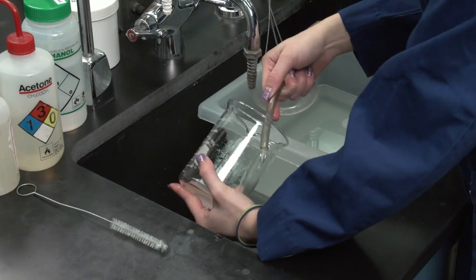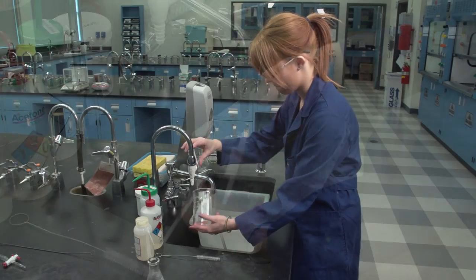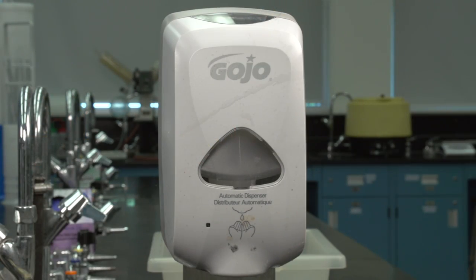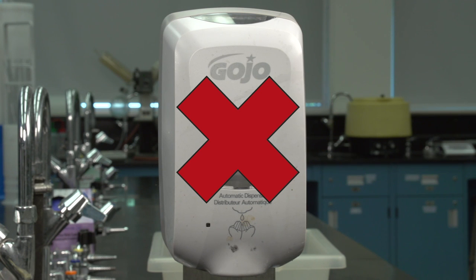After soaking, rinse the glassware thoroughly with tap water followed by a small distilled water rinse. Never use hand cleaner or soap. Hand cleaners usually contain hand lotion additives which leave an oily film on the glass.